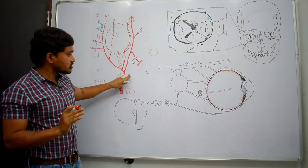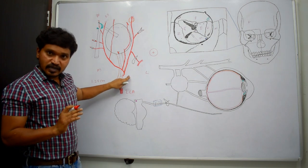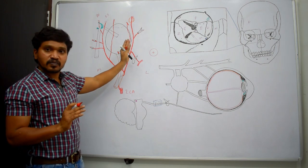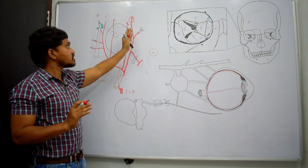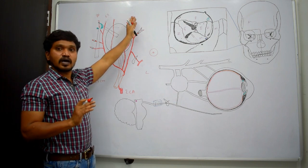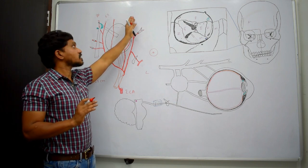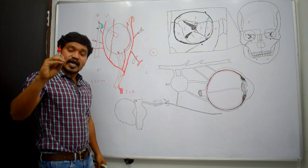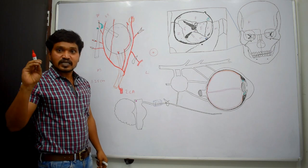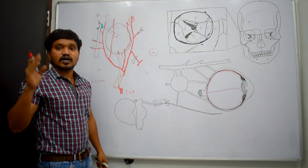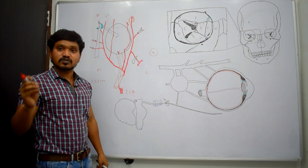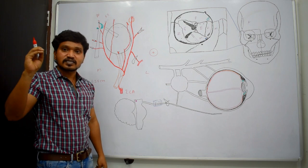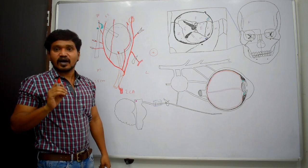The lacrimal artery branches from the ophthalmic artery, runs along the lateral wall, and reaches the anterolateral part, where it supplies the lacrimal gland and divides into lateral palpebral arteries, supplying the palpebrae — that means the eyelids, conjunctiva, and skin of the eyelids.